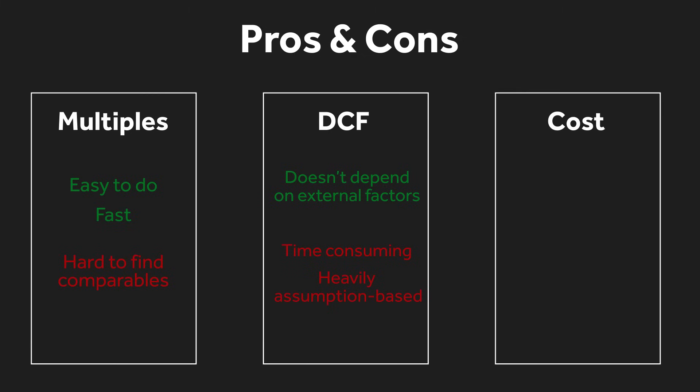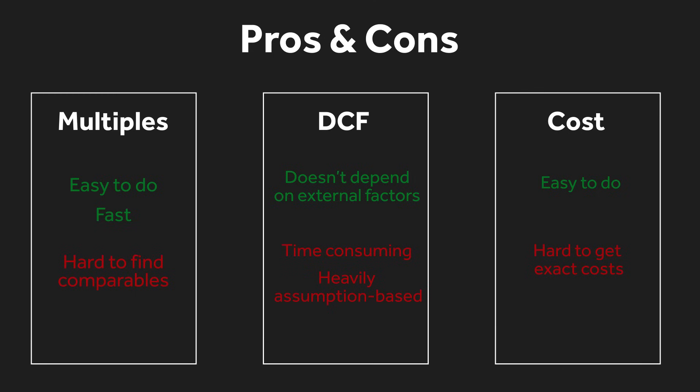Looking at the cost approach: the main pro is that it's very easy to do and understand. On the con side, costs aren't always easy to account for accurately — maybe it cost $100,000 to construct a house five years ago, but now with a booming market it's much more expensive. Another con involves government permits and regulation: maybe you had a warehouse that's been there for 20 years, but new regulations now prevent building in that area, so you can't actually calculate a replacement cost anymore.